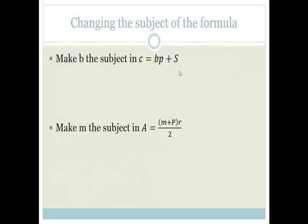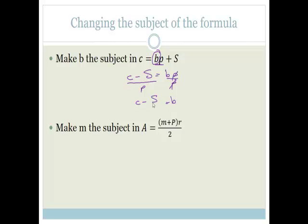Now, let's look at changing the subject of the formula. You need to be able to do this both in maths and in physical sciences. It says make B the subject in C is equal to BP plus S. We're looking for B. To get B, we need to get BP isolated. So, C minus S is equal to BP. To get B by itself, we need to divide both sides by P. These cancel and you're left with B is equal to C minus S over P. Nice and easy.